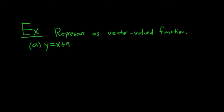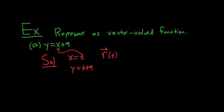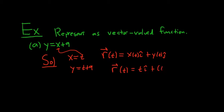This one is actually pretty easy. One thing you can almost always do is start by letting x be equal to t — make a substitution — so x is t. Now just plug t into your formula for y, so y equals t plus 9. We've created parametric equations for this line. Using the formula for a vector-valued function: x(t) i-hat plus y(t) j-hat, we replace x(t) with t, giving us t i-hat plus (t + 9) j-hat.